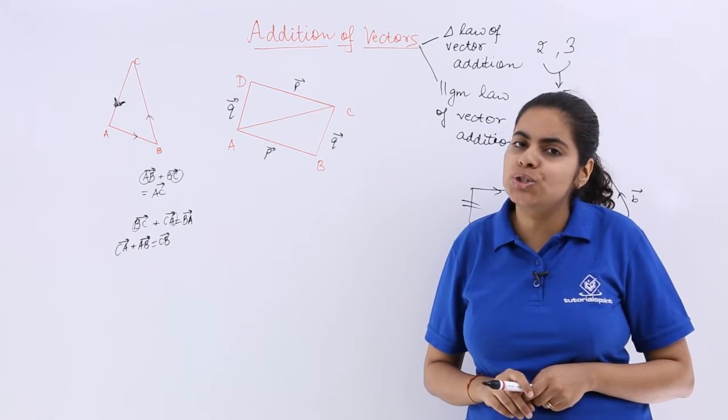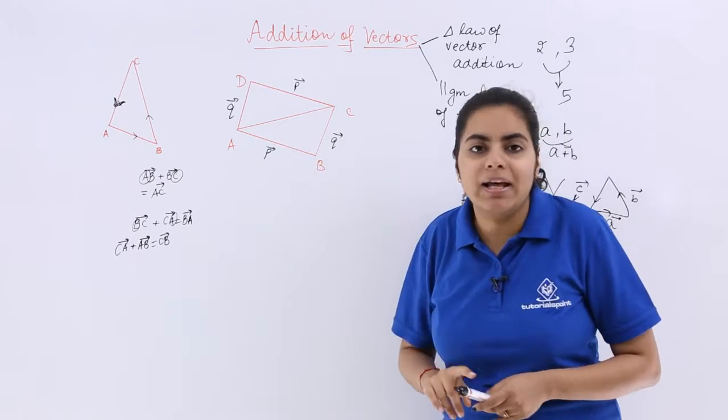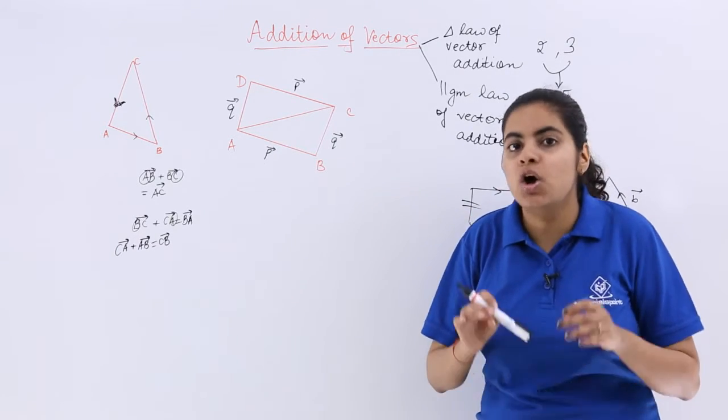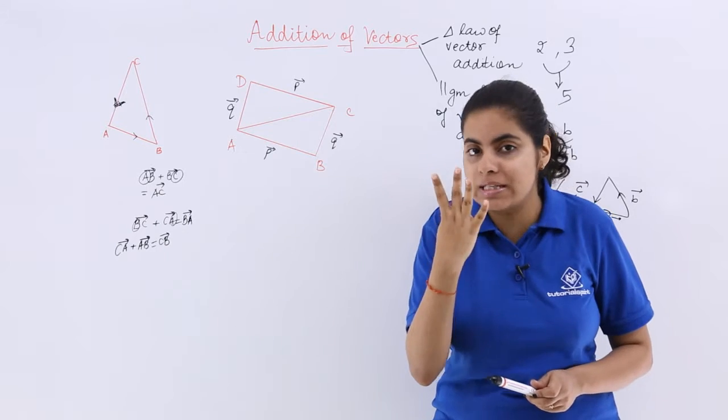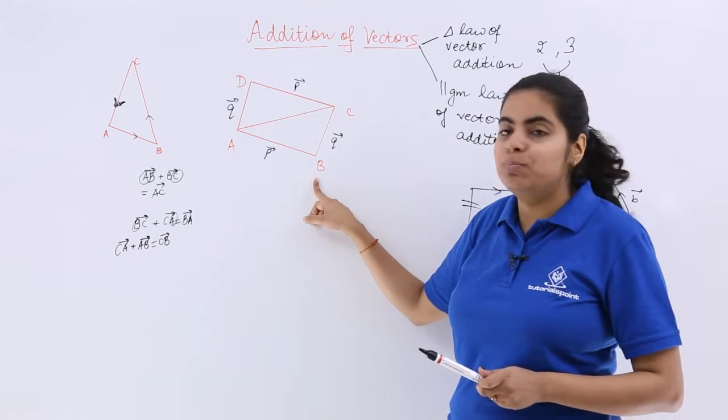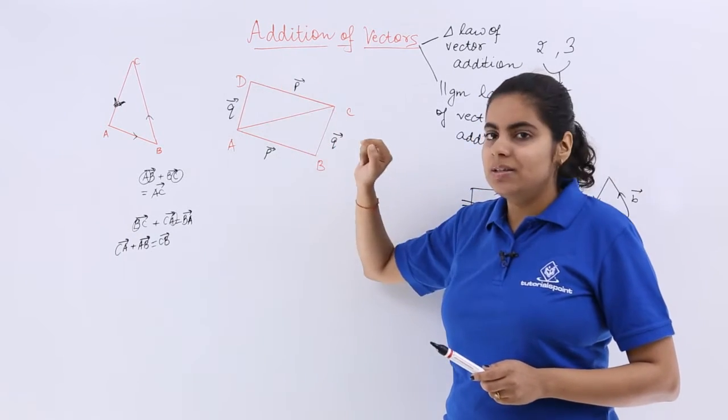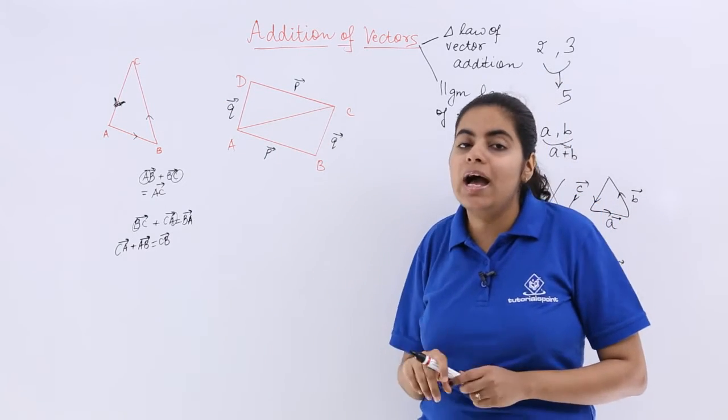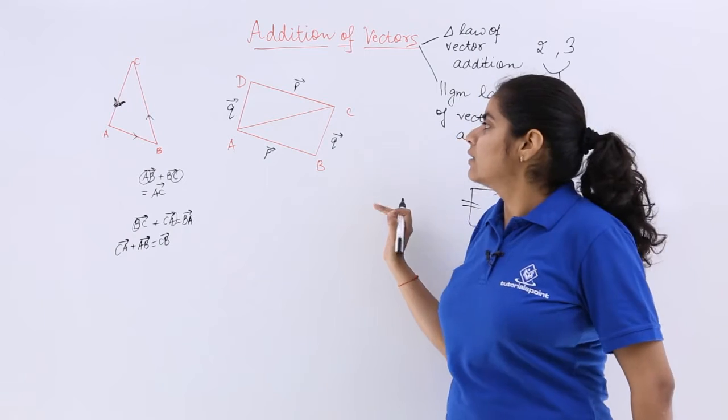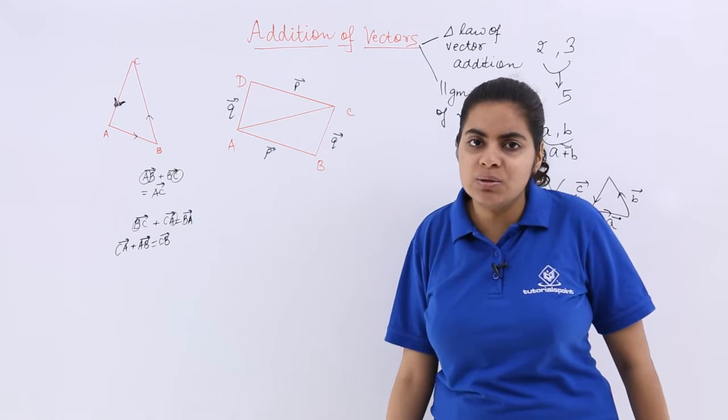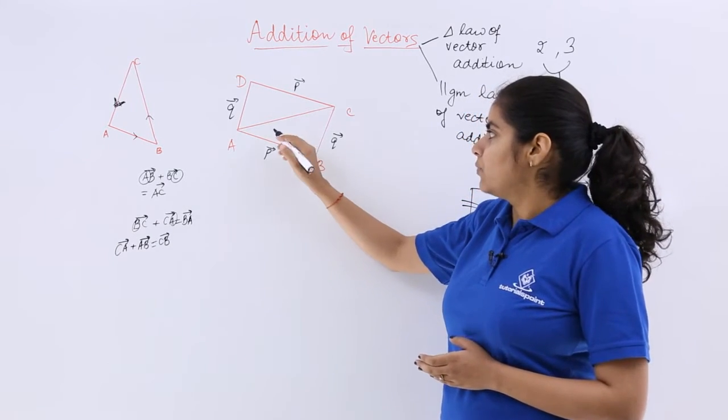So this is the parallelogram law of vector addition. Do not get panicked. As you can see, AC is the diagonal. AC is the diagonal of the given parallelogram. Now when AC is the diagonal of this parallelogram, I can say that ABCD, which are the four corner vertices of the parallelogram, have AB as P vector, BC as Q vector, CD as P vector, and DA as Q vector. I have not assigned the proper arrows, so I can say DA as AD till this point. Now why is Q vector here also, Q vector here also? Because the opposite sides of the parallelogram are equal as well as parallel. This has a diagonal.